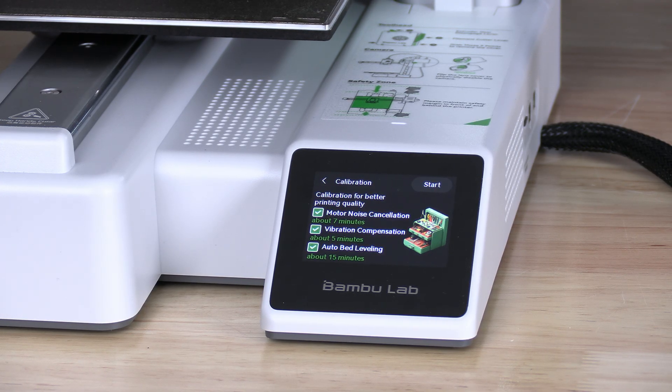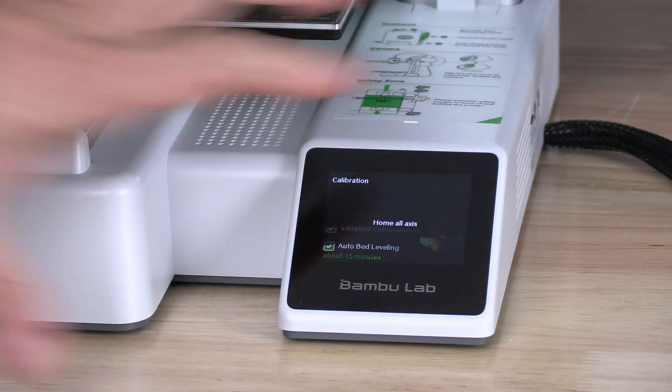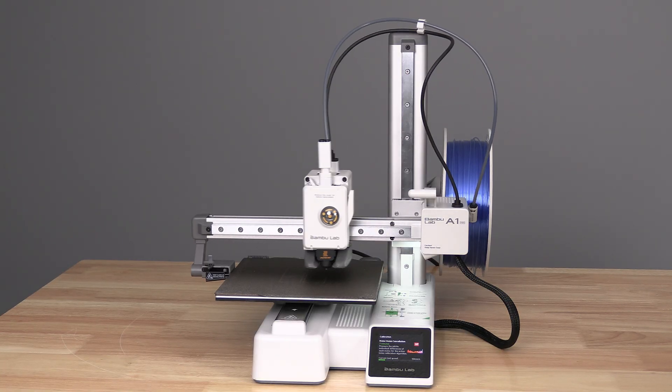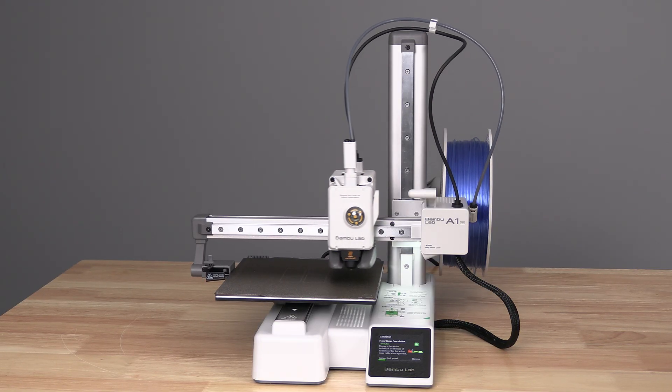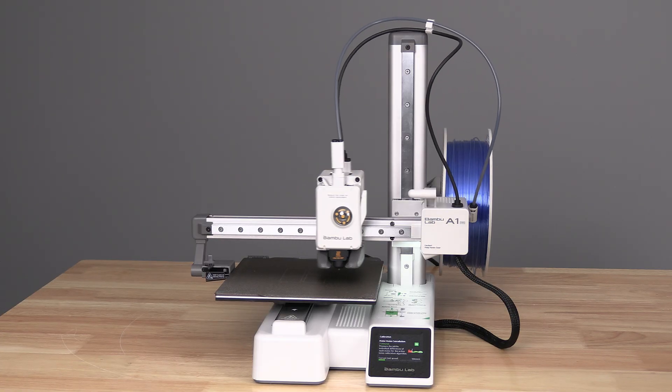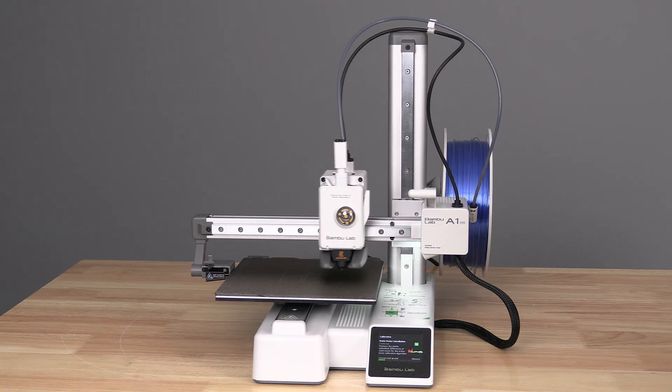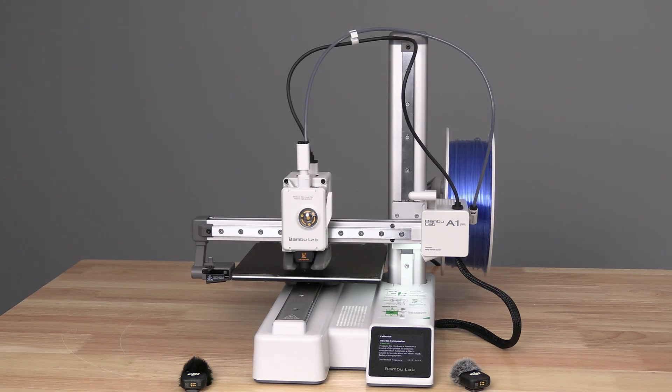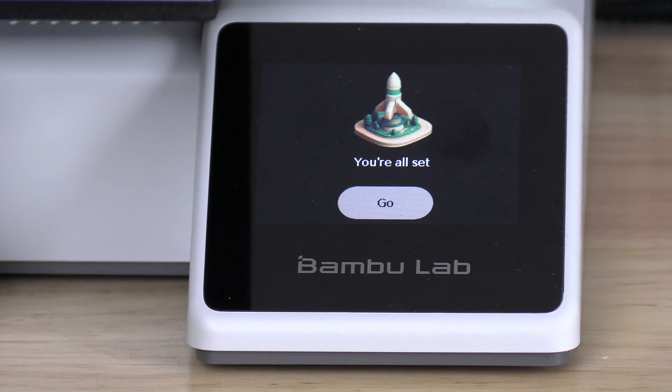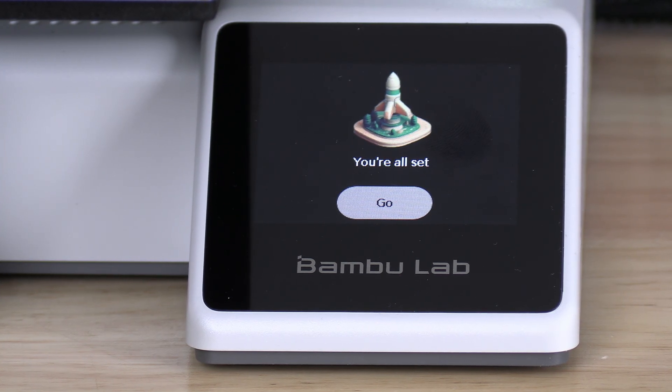Here on the screen, you will see the printer wants to run calibrations. Press Start. Your A1 Mini will go through a calibration process that will consist of a bunch of scary movements and weird noises. All of this is normal. Leave it alone until it is done. You may touch the screen and press Go.